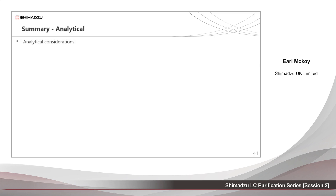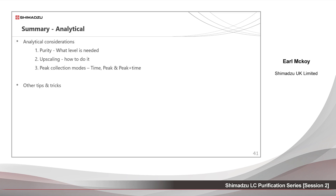Analytical considerations: firstly, purity — what level is needed. Secondly, upscaling and how we do this. Thirdly, peak collection modes — time, peak, and peak plus time. Other tips and tricks: we mentioned different detectors and how practical they are for purification. We also mentioned the need for preparative flow cells.